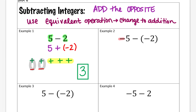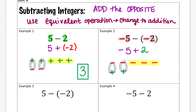In example two, I have negative five and I'm taking away or subtracting negative two. Let's start with five negatives. That's not going to change. What is going to change is I'm going to add the opposite — change subtraction to addition, and the opposite of negative two is positive two. So I add two positives underneath. Now I have zero pairs, and I'm left with three negatives, or an answer of negative three.